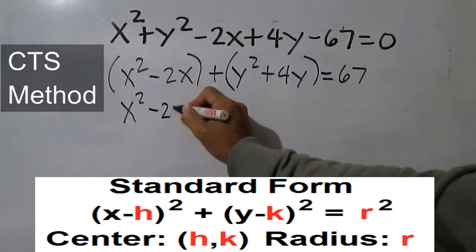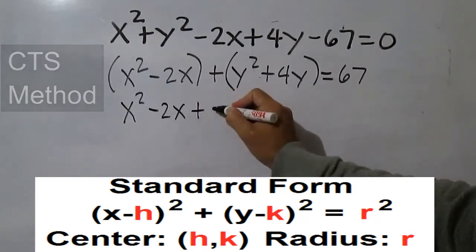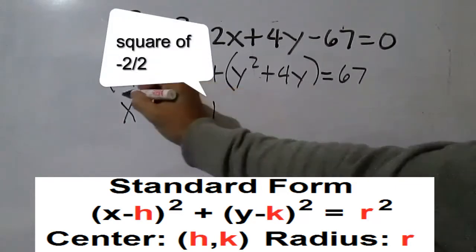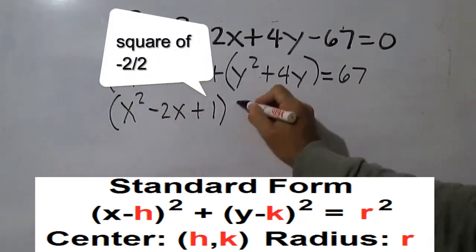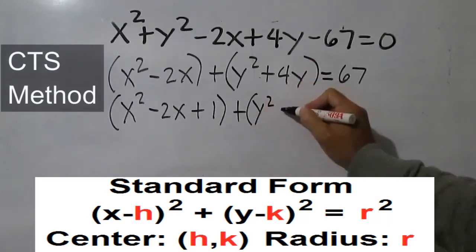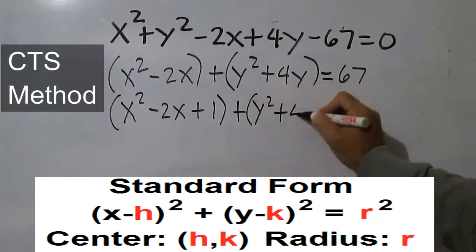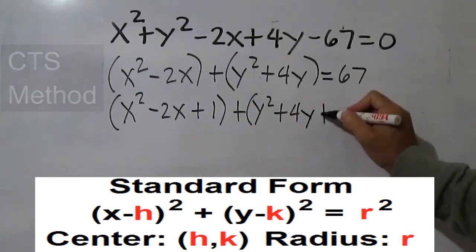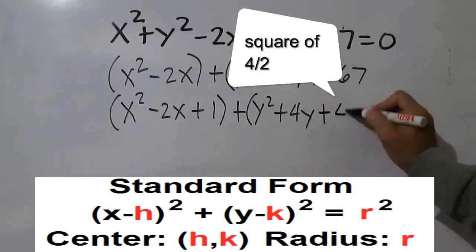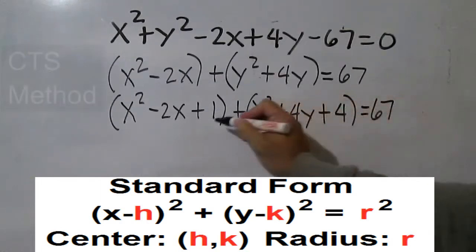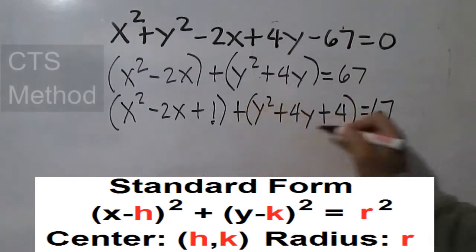Negative 2 divided by 2 is negative 1, squared is 1. Then 4 divided by 2 is 2, squared is 4. Add these values to the right side of the equation as well.